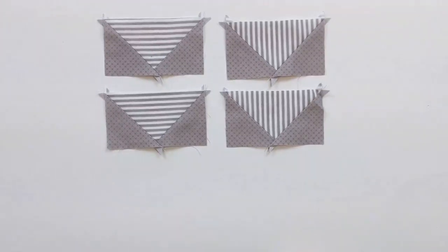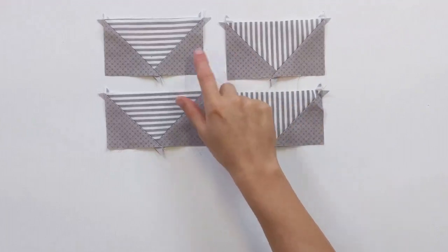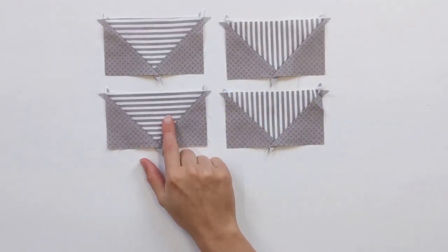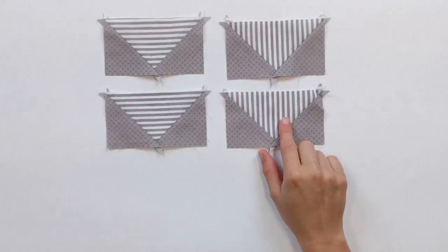The third thing that you'll notice about four at a time flying geese is that all four of these were made out of the same fabrics together. Two of them, the stripes are going horizontally and two of the stripes are going vertically.